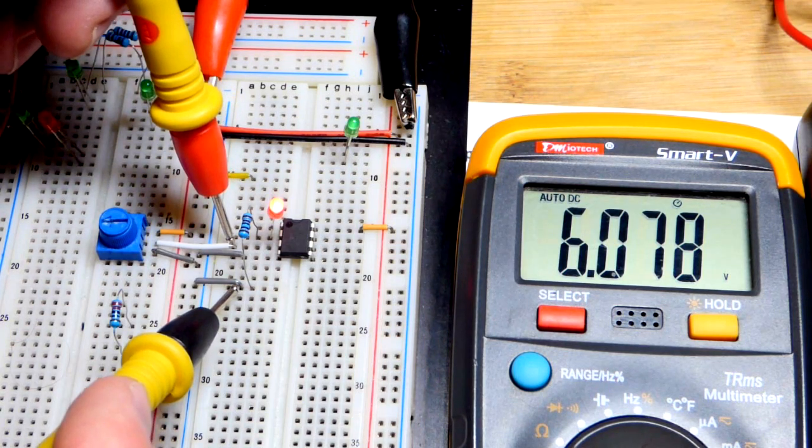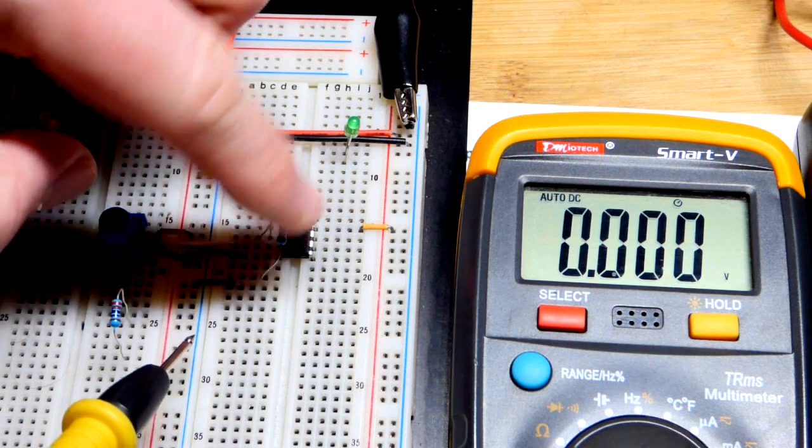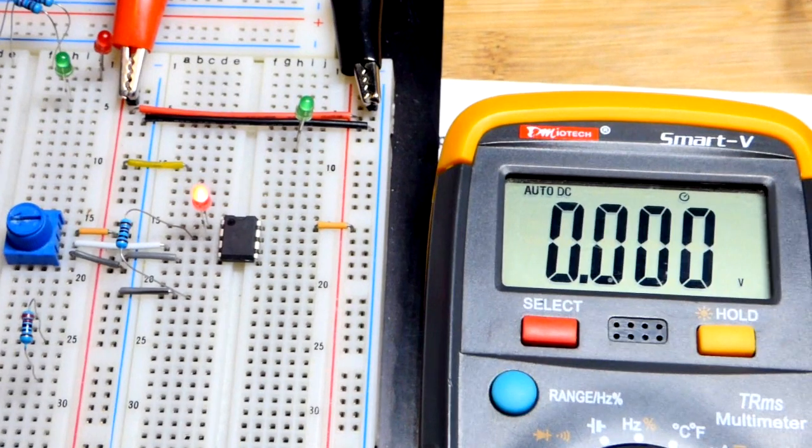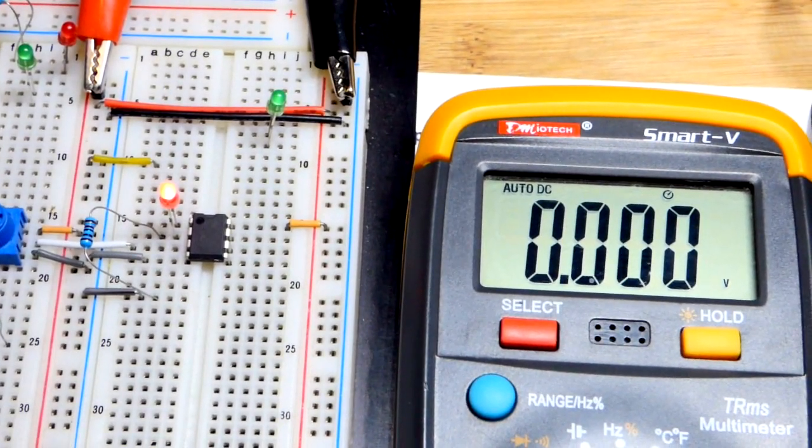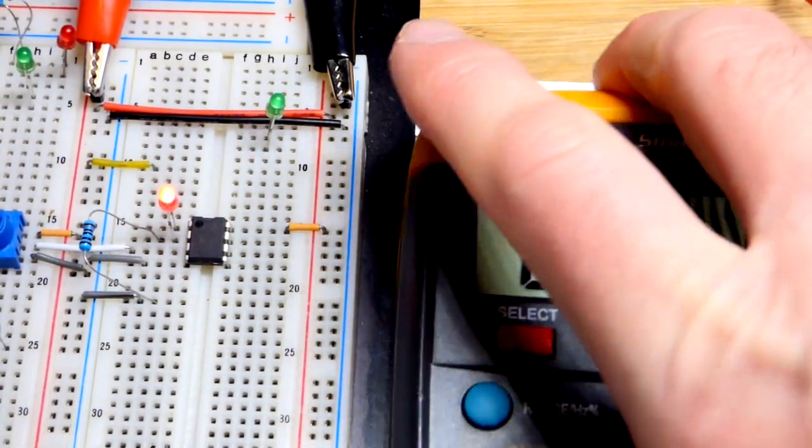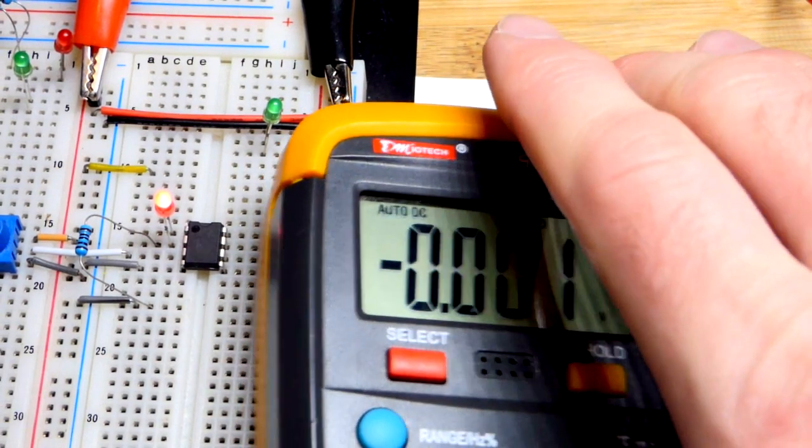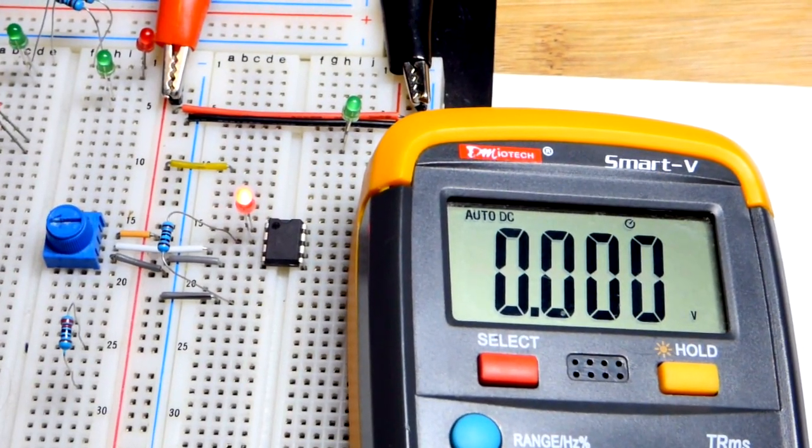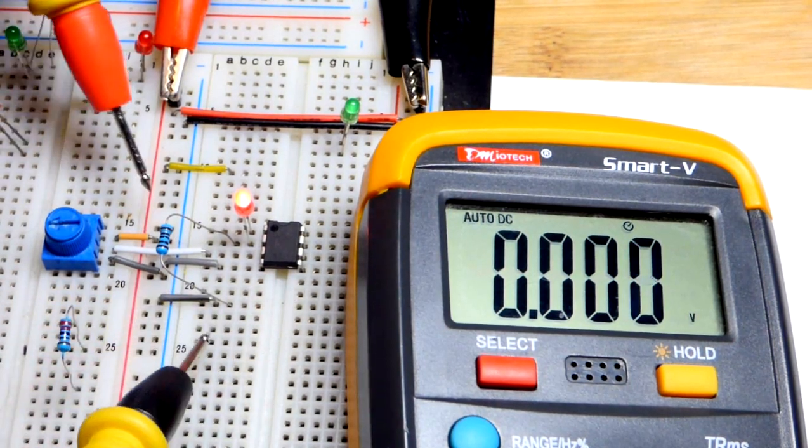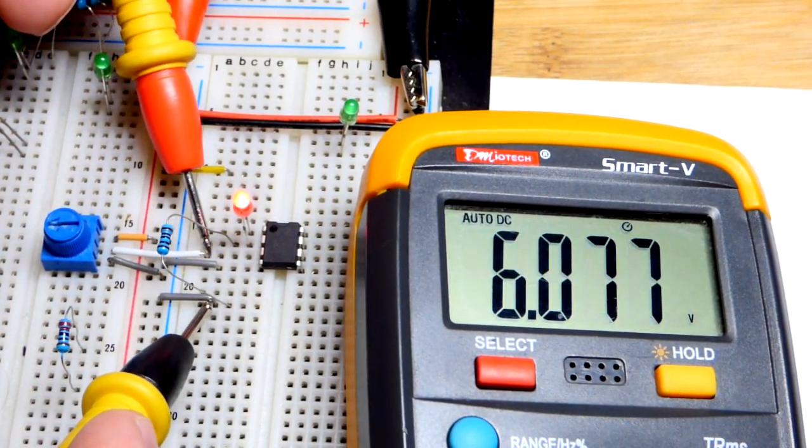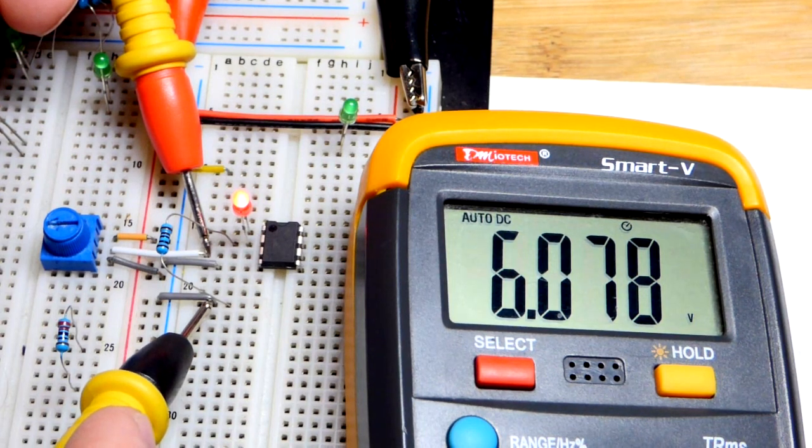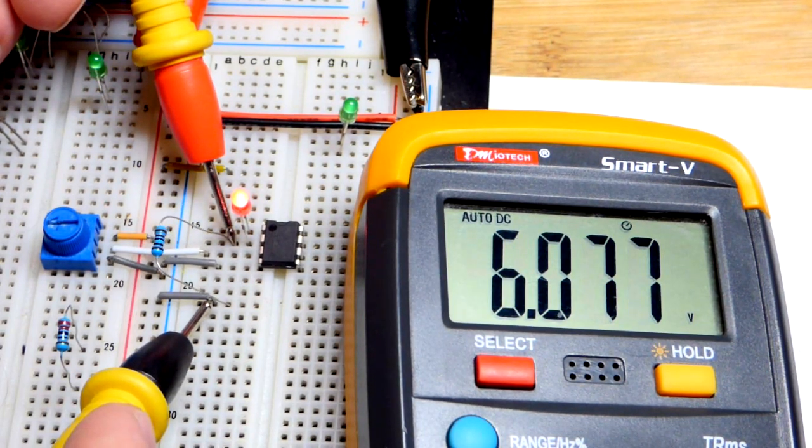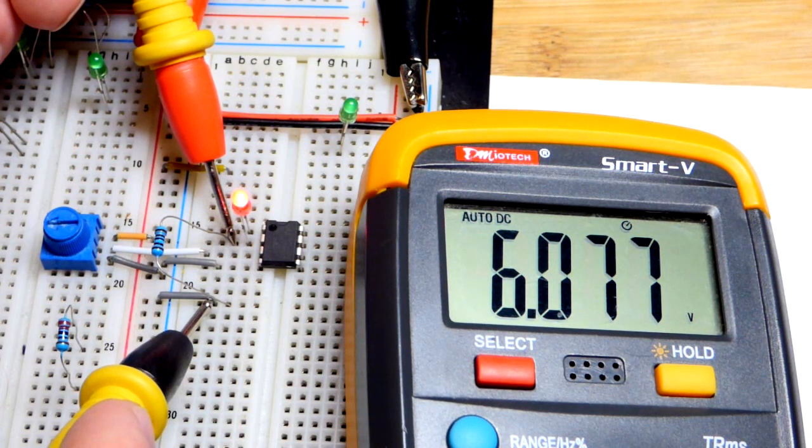Now we're going to measure across the resistor. So I'll actually bend it this way. We'll zoom in a little closer so we can see it. In fact, I can just move the meter over a little bit. And so now we'll go back to measuring the trim pot output right there. About a little less than 6.1, but we got the exact same voltage right there.